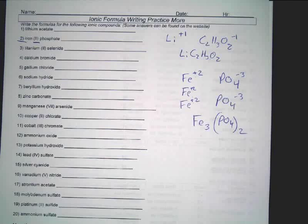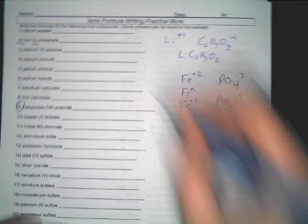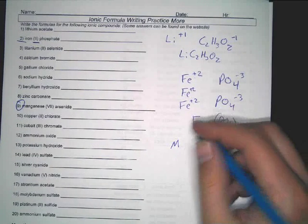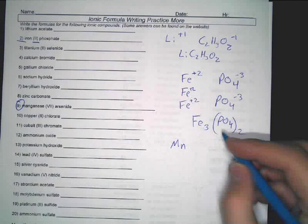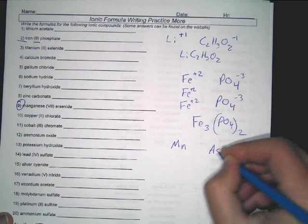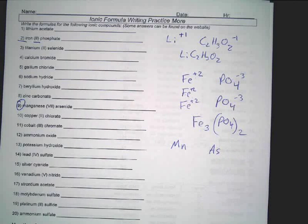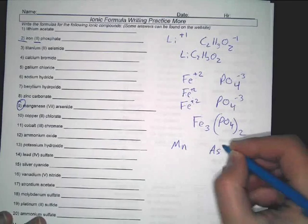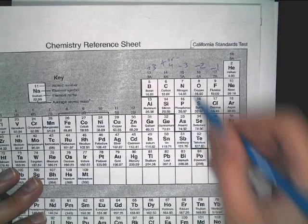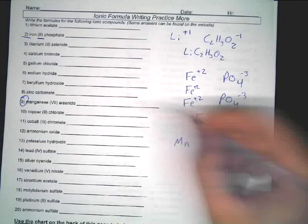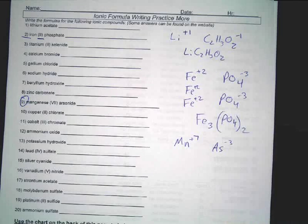Now let's do number nine. This has given people tons of trouble. Manganese is Mn. Arsenide is arsenic, that's As. Now I can look on my periodic table. Arsenic's a minus three. If you don't believe me, it's right there. Minus three. Manganese, this tells us, is plus seven.